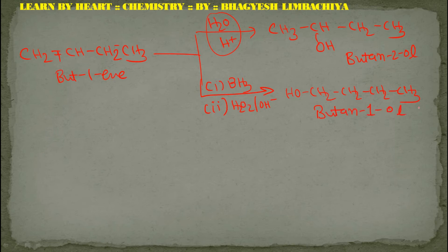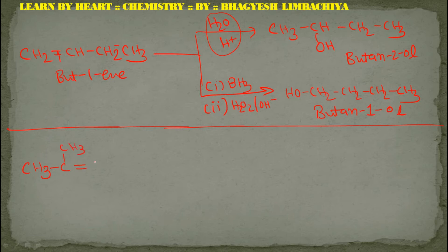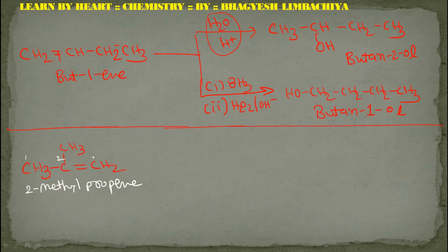And if the acid hydration reagent is used, OH comes on the outer side, giving butan-1-ol. Similarly, consider 2-methylpropene: there are three carbon atoms, one, two, and three; on the second carbon there is a methyl group, so it is 2-methylpropene. The common name is isobutylene.